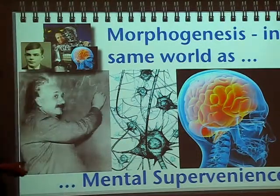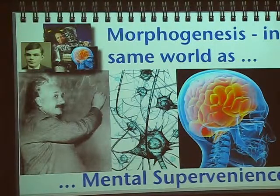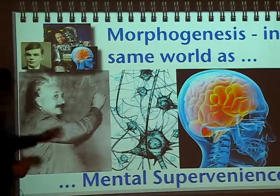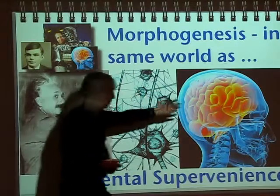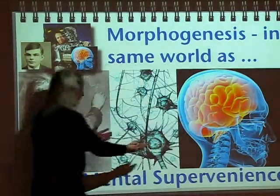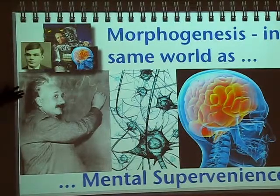Turing tended to do things without knowing what other people were doing — thinking up things without reading the literature. So here you've got your basic causal structure, and out of it comes fantastic creative thinking, maybe. The intuition is that it's in the same basket of phenomena.